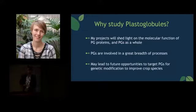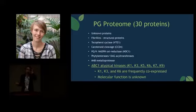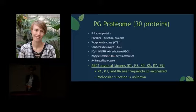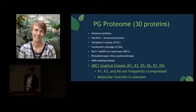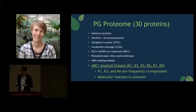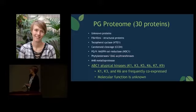Plastoglobules contain a proteome of about 30 proteins. In my research this summer, I focused on ABC1 atypical kinases, specifically K1, K3, and K6. I focused on these three because they frequently co-express with each other, which suggests they could be related in function. The molecular function of these kinases is currently unknown, though they're clearly important as mutations in these genes cause various deleterious phenotypes.